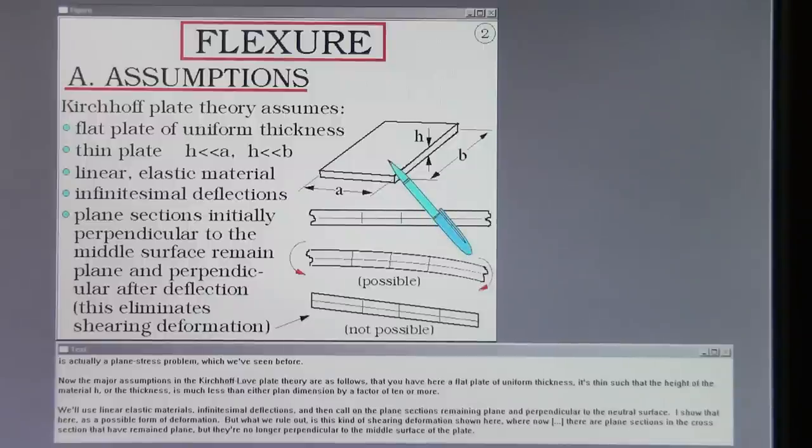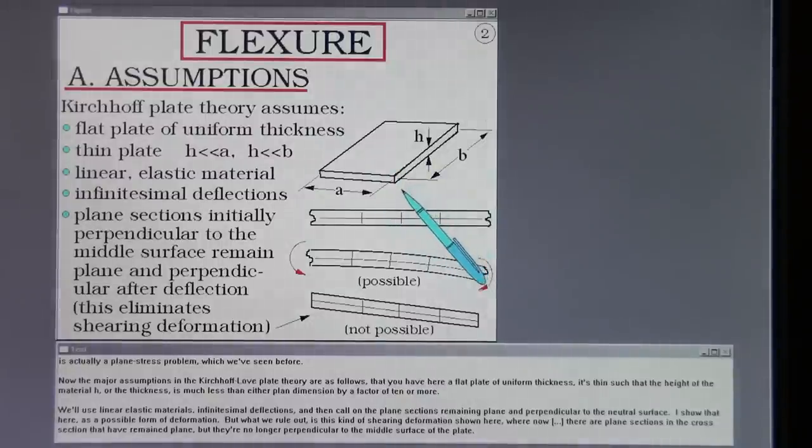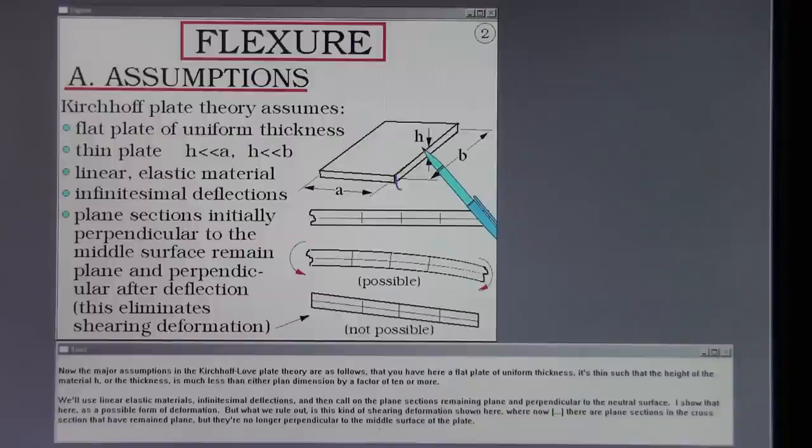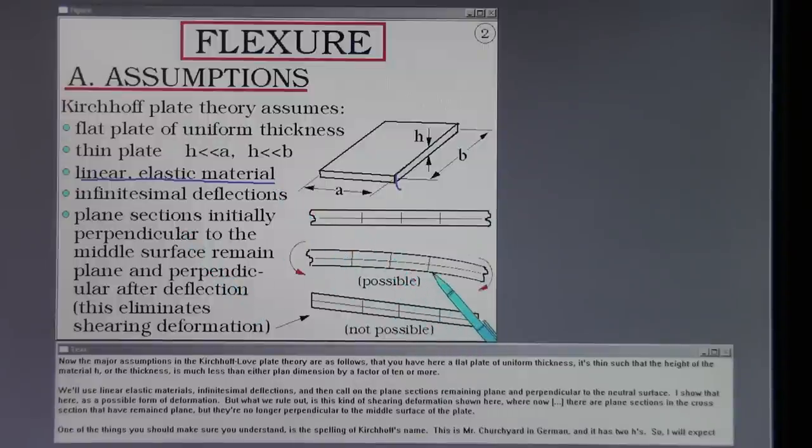Now the major assumptions in the Kirchhoff-Love plate theory are as follows. That you have here a flat plate of uniform thickness. It's thin such that the height of the material h, or the thickness, is much less than either plan dimension by a factor of ten or more. We will use linear elastic materials, infinitesimal deflections, and then call on the plane sections remaining plain and perpendicular to the neutral surface.